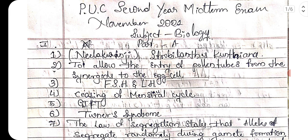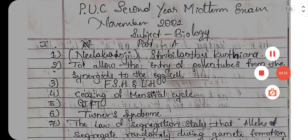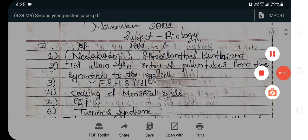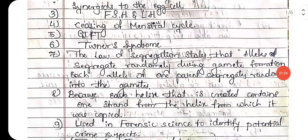The hormones which help in the development of corpus luteum are FSH and LH — follicle stimulating hormone and luteinizing hormone. Fourth one: what is menopause? The ceasing of the menstrual cycle is known as menopause.